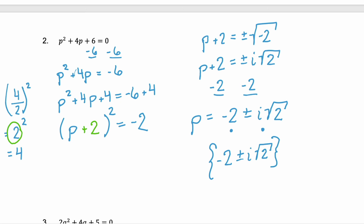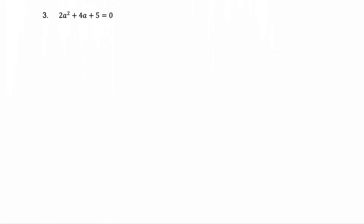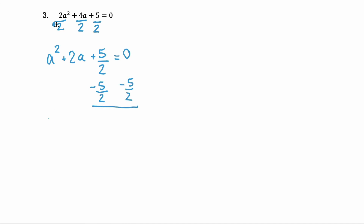Now it's time for one that does not have a leading coefficient of 1. In example 3, we need to make the leading coefficient 1 by dividing by whatever it is — here it's 2, so we divide every term by 2. Our first term becomes a squared, our second term 4a divided by 2 becomes 2a, and our constant is 5 halves, equal to 0. Step 2: isolate the variables by subtracting 5 halves from both sides, giving us a squared plus 2a equals negative 5 halves.